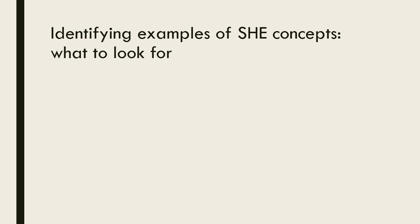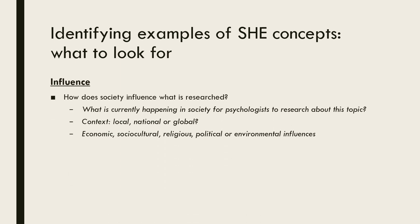Let's start with influence. There are two aspects to influence: how society is influencing what is researched, and how what is researched is influencing society. When looking for examples of how society is influencing research, ask yourself: what is currently happening in society for psychologists to research about this topic? A perfect example is the many research studies examining the impact of the COVID-19 pandemic and lockdowns on mental health, which can be looked at in a local, national and global context. Aspects of society that influence research can be economic, sociocultural, religious, political or environmental, and multiple influences may be at play.